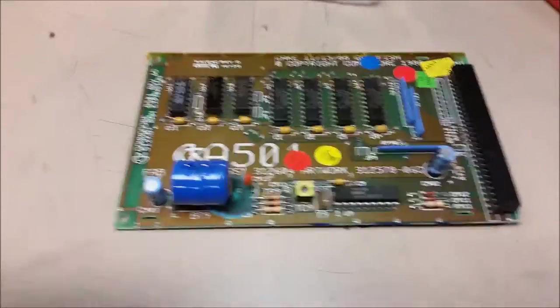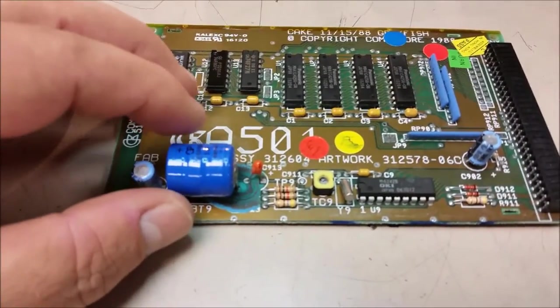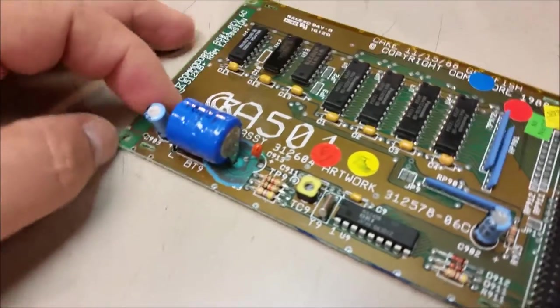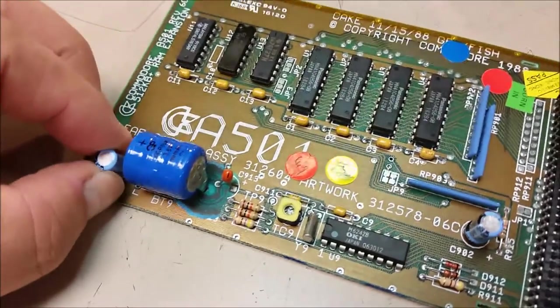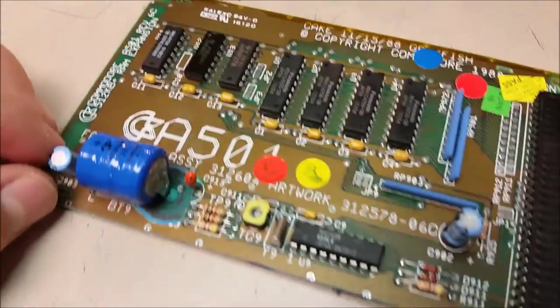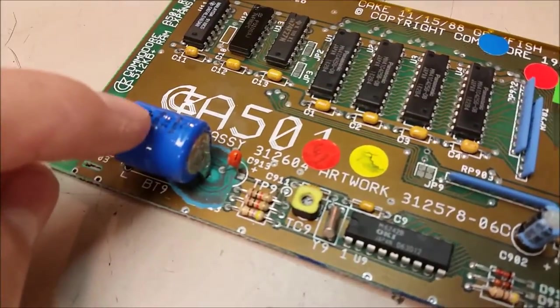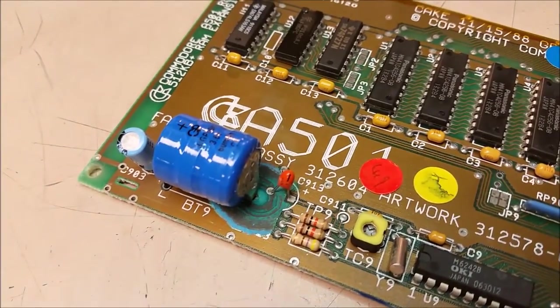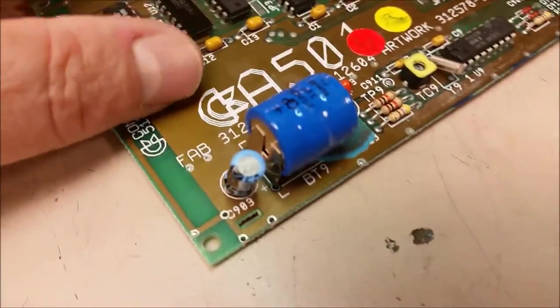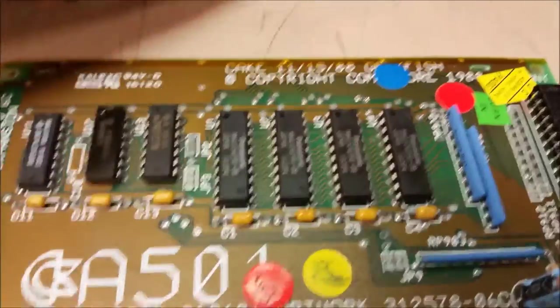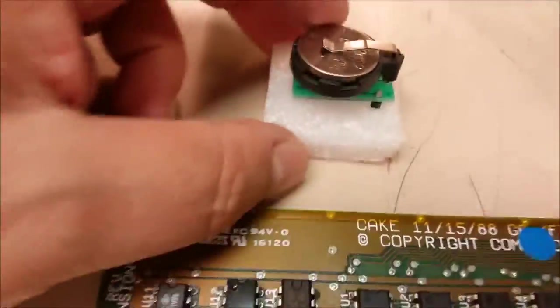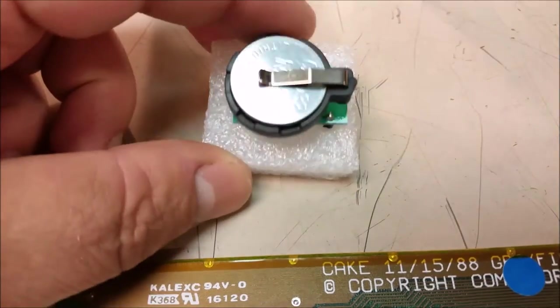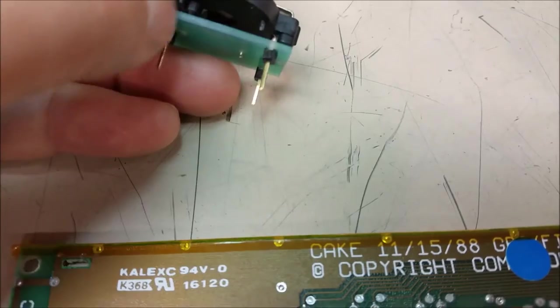All right, today we're going to remove the battery on this Amiga A501 board. They have a bad habit of the batteries going bad and leaking all over the place, putting corrosion all over the board. Instead of putting just a regular battery back in, we bought this kit that gives you a battery on top. So let's get to it.